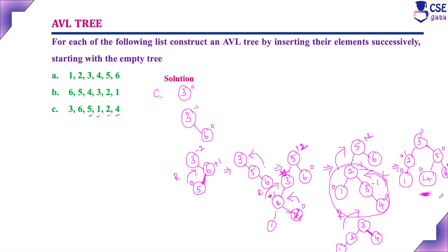When considering AVL tree insertion, single left rotation and single right rotation are easy to understand. Whenever a double left-right rotation or double right-left rotation occurs, you need to draw the intermediate tree. When implementing a double left-right rotation, first implementing the left rotation gives you this intermediate tree, then implementing the right rotation gives you the final tree. This can sometimes be confusing, so try to understand and roughly draw the intermediate tree for understanding purposes. Once you understand the logic, it is very easy to implement.